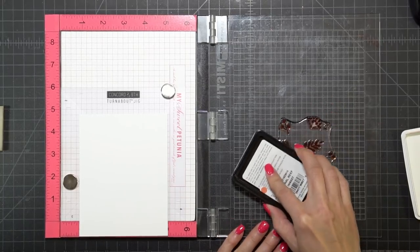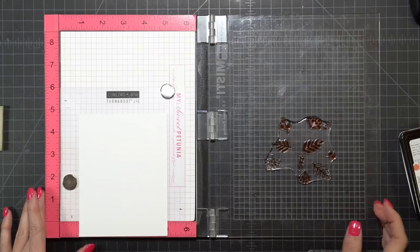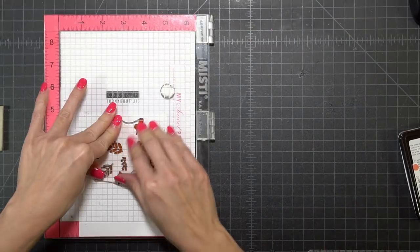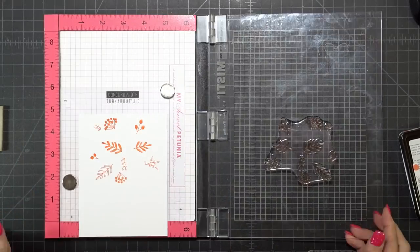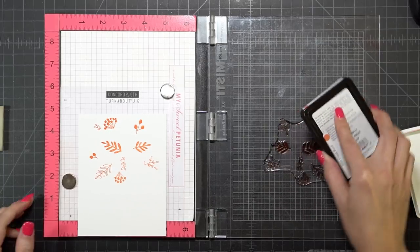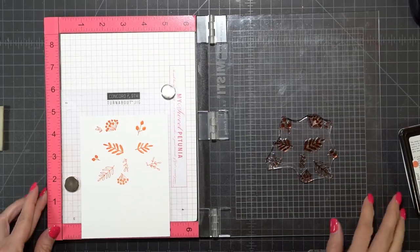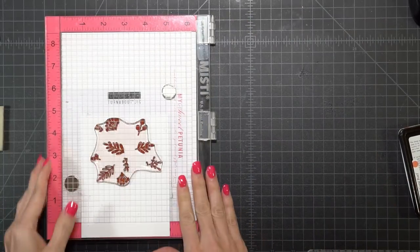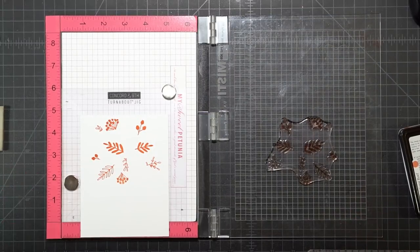I'm starting off with Simon Says Stamp Coral Reef and I'm just going to apply pressure. Now I can check to see if I need to stamp again, and because this is the first time I'm using my stamp, it still needs to be seasoned, so I stamp it a second time.